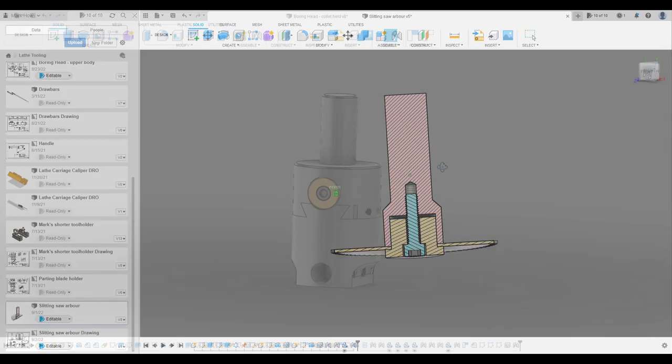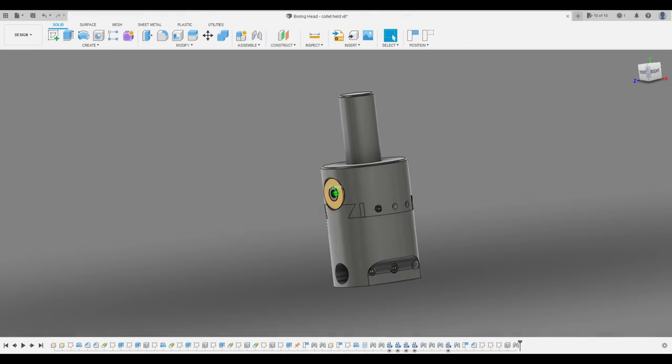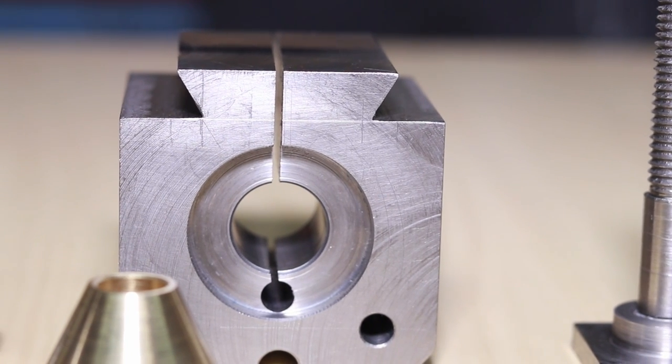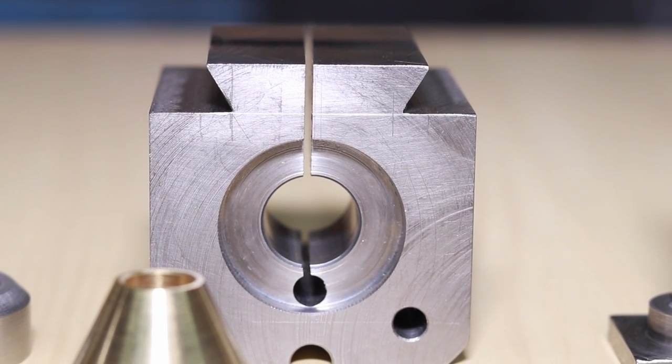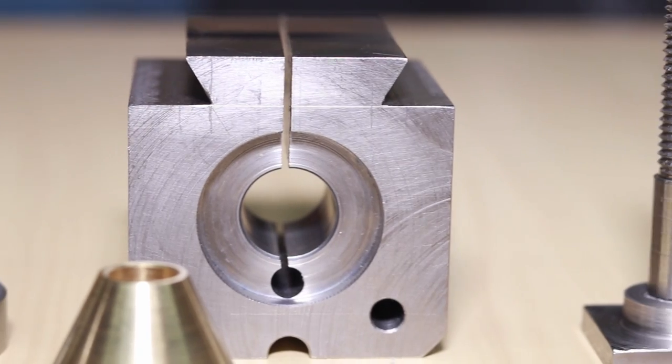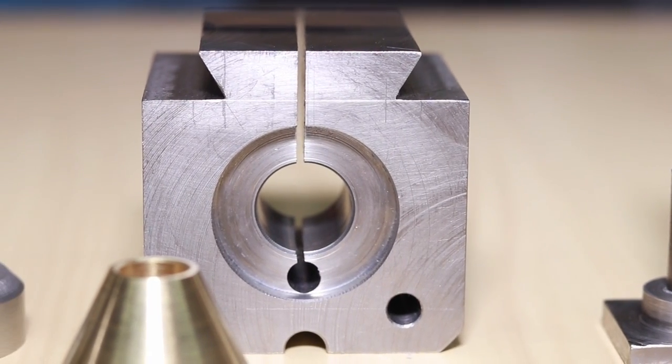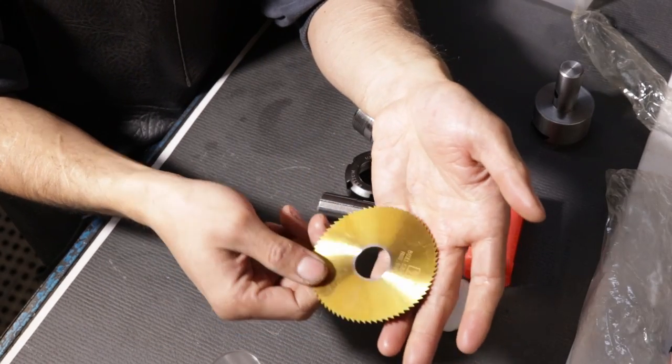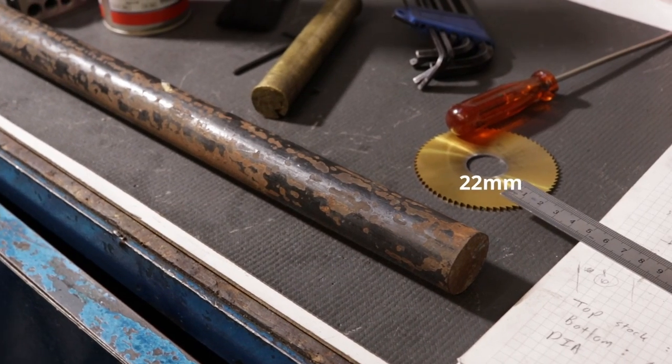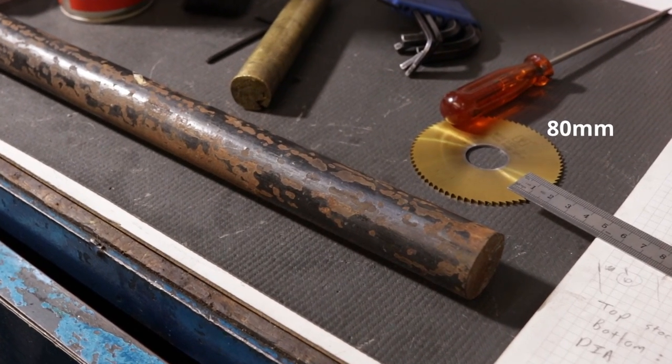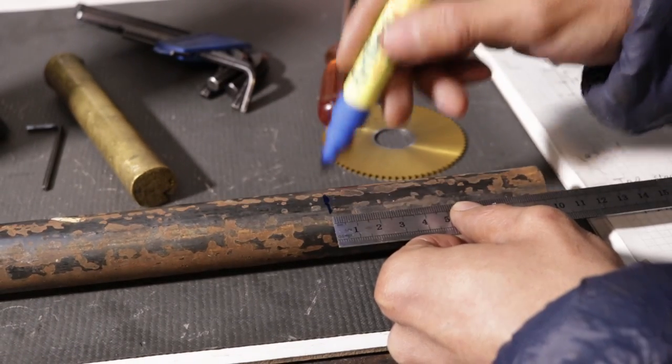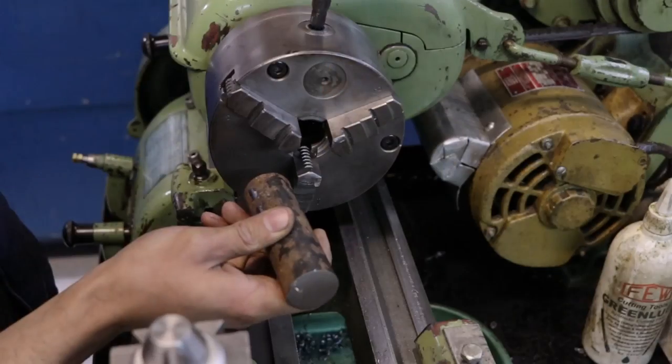Today I'm making a slitting saw arbor for an upcoming project that I'm working on. In truth, I really could have done with one before when I made the quick change toolpost build, and yeah, I'm going to have to live with that. But anyway, today is the day that's all going to change because I have this El Cheapo Cobalt slitting saw that I recently purchased, and it has about a 22 mil internal bore and an 80 mil outer diameter, and I'm going to be making the whole thing, well most of it, out of this piece of hot rolled mystery steel that I have lying around.